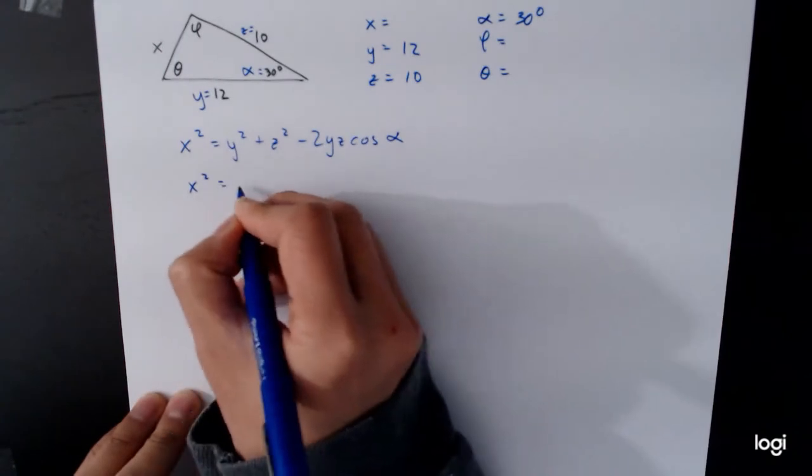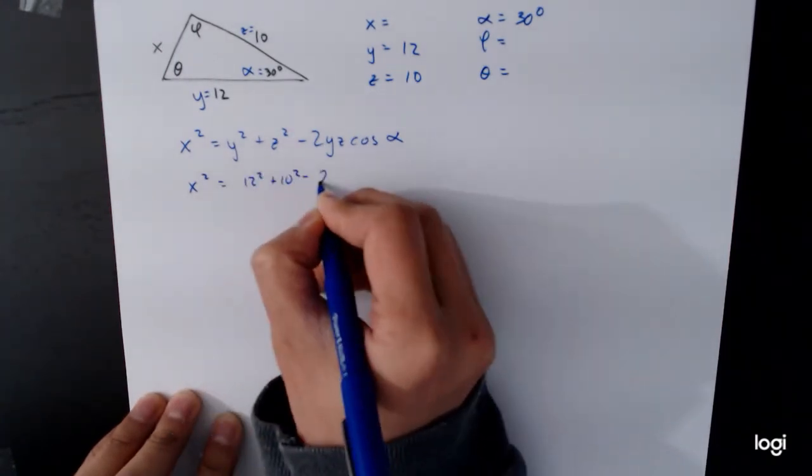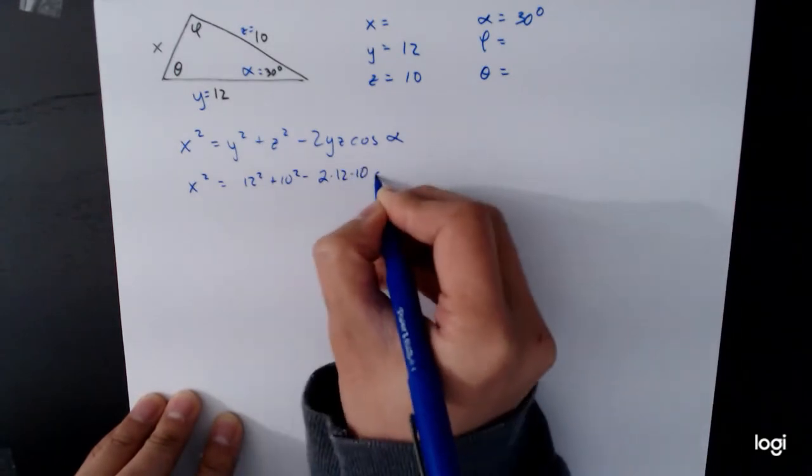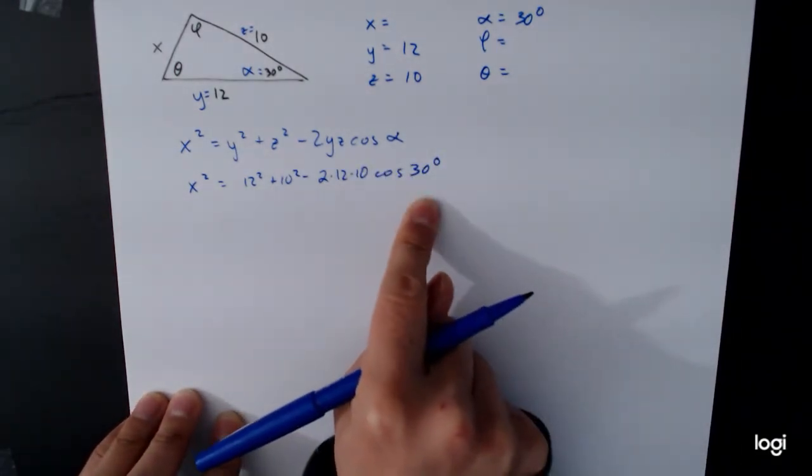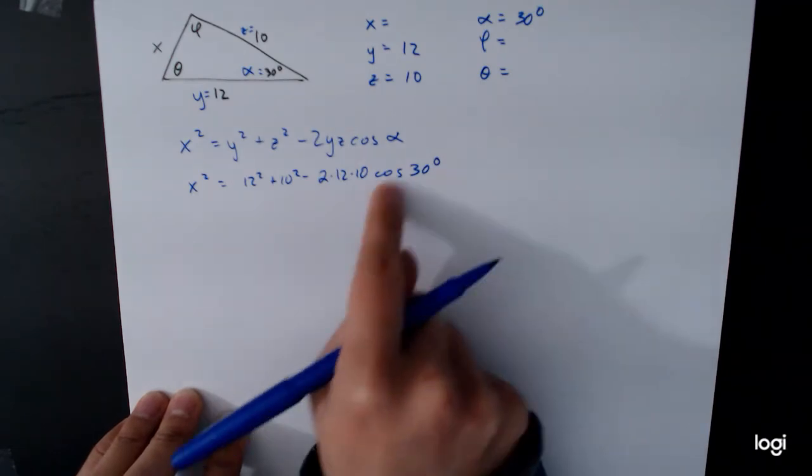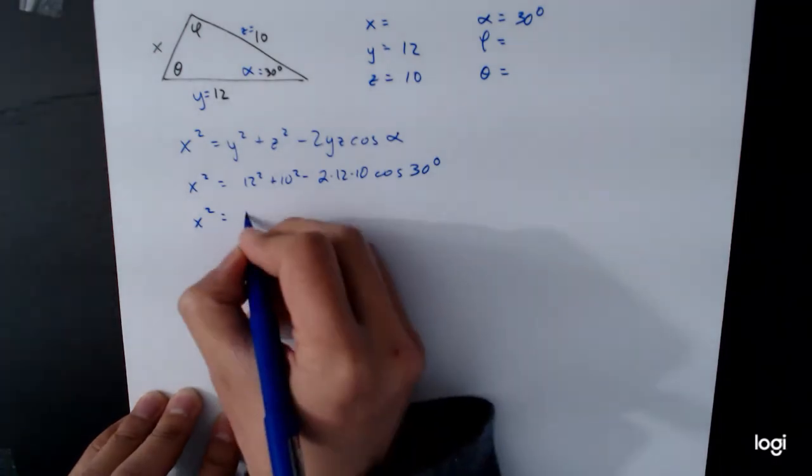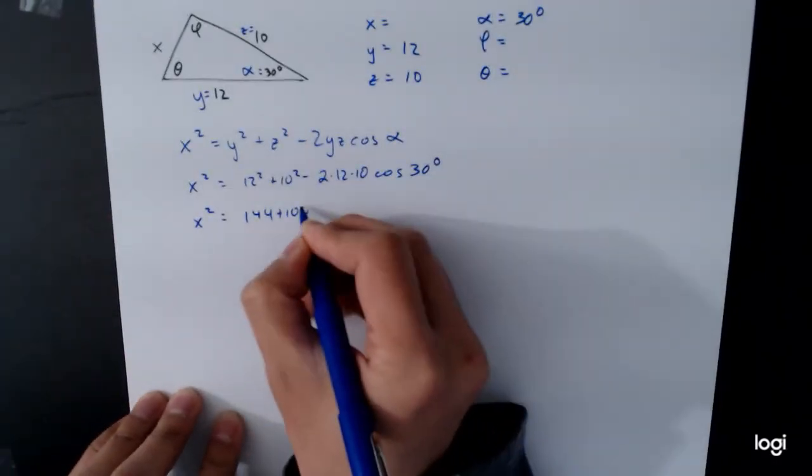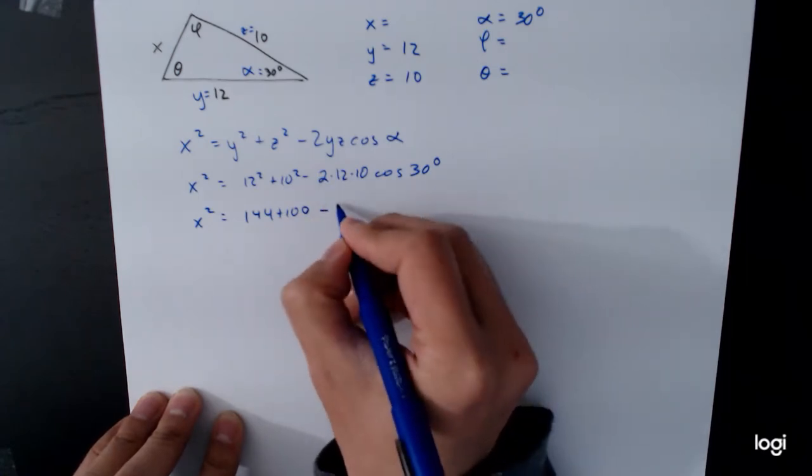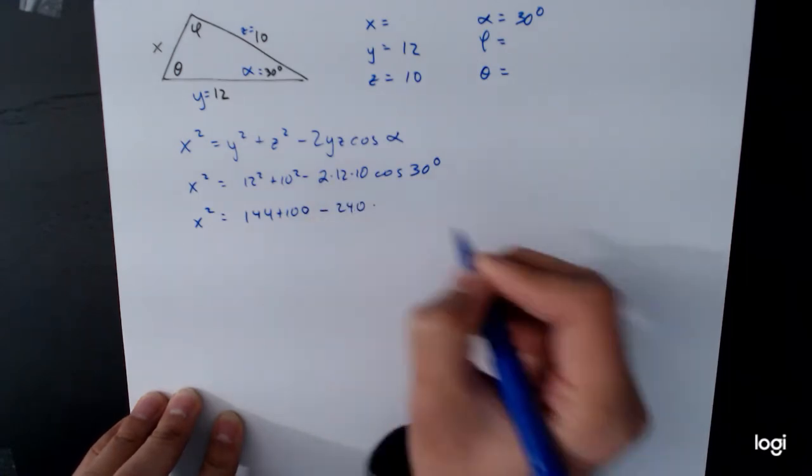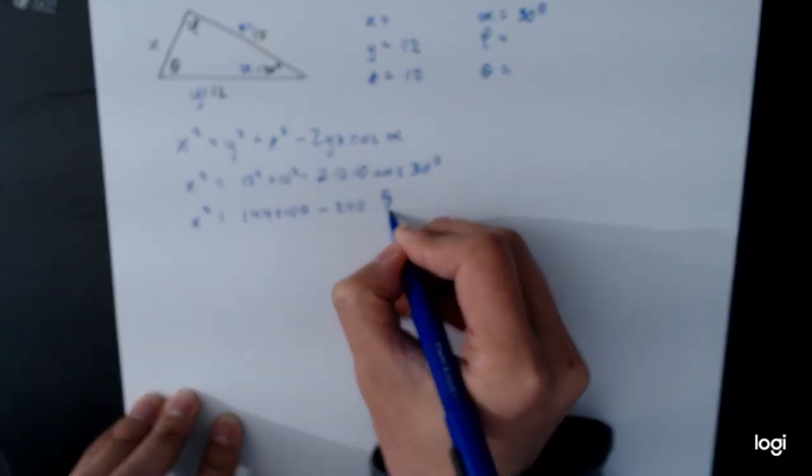Plug it in. And x squared equals 12 squared plus 10 squared minus 2 times 12 times 10 times cosine of 30 degrees. Now we know what cosine of 30 degrees is. This is a value that we've seen off our chart, so we're actually going to use the exact value for as long as possible. 12 squared is 144. 10 squared is 100. 2 times 12 is 24. So minus 240 times cosine of 30 degrees. So cosine of 30 degrees is square root of 3 over 2.